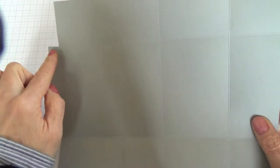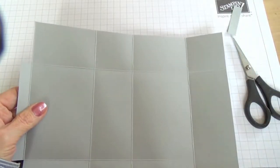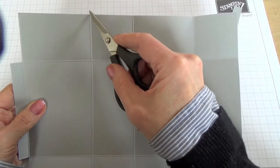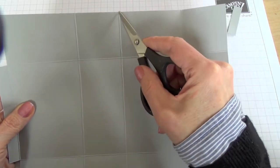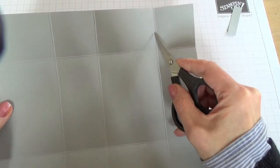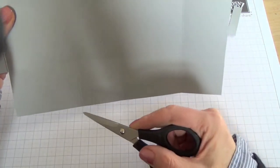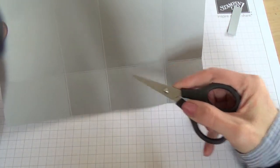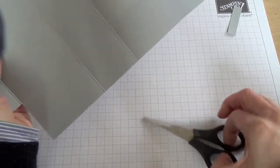Once you've cut these corners away, you're going to use your paper snips to cut down your score lines and also up from the bottom.